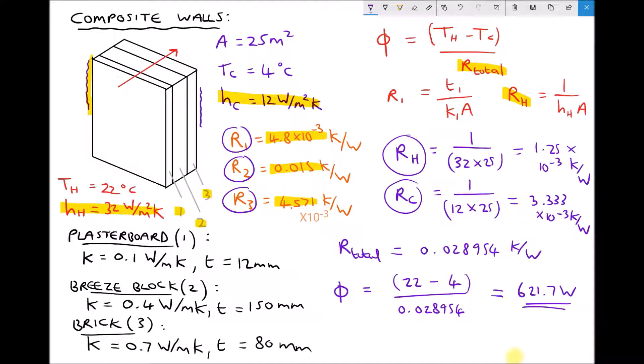Now when we disregarded the surface heat transfer coefficients, we had a heat transfer of 738.6. So by taking into consideration that thin layer of air at the inside and outside surface, we can see that a more accurate representation of the rate of heat transfer is actually slightly lower. Meaning that less heat is actually being lost from the room to the outside air. Now once again it is worth mentioning the calculations that we've done there are for an area of 25 meters squared. If we wanted to know the rate of heat transfer per meter squared, then all we would need to do is divide our value of 621.7 by the area of 25. And that would give us the rate of heat transfer per meter squared of wall. The advantage of calculating that would be that it would give us a point of reference for different wall constructions and the rate of heat transfer for different composite walls.